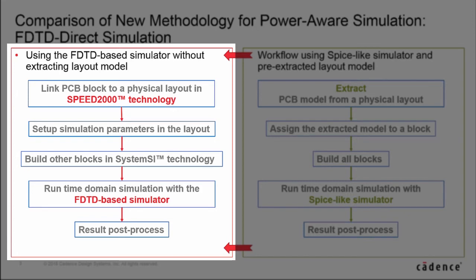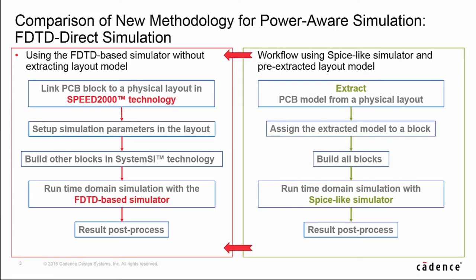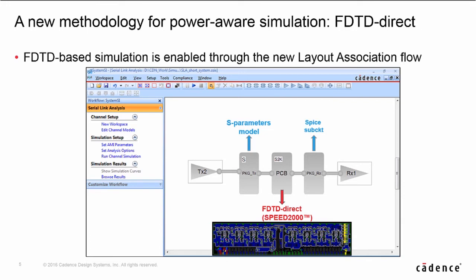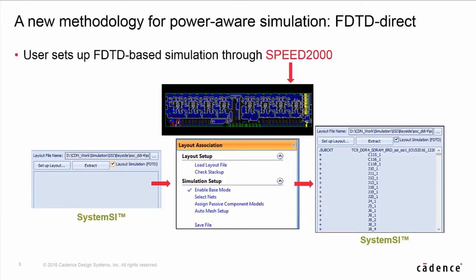对于含有非理想电源的信号仿真,我们不必从 layout 当中提取模型,而是将 SystemSI 中的一个模块与一个电路板或封装的 layout 直接联系起来。没有了模型提取的转换,仿真器也不再是和 SPICE 一样,而是基于时域有限差分的方法。这种新方法为用户提供了两种环境,它们集中了 Physical Layout 和系统仿真的优点。再加上基于时域有限差分方法的仿真器,就可以捕捉电源和信号之间的相互影响。